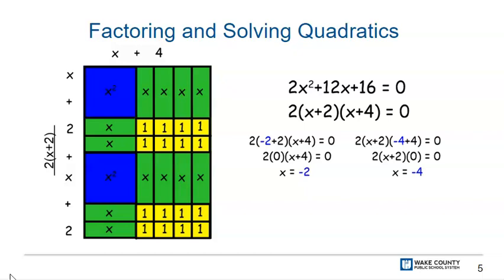In the example shown, there are three factors being multiplied: 2, x plus 2, and x plus 4. x equaling negative 2 can make one of these factors equal zero, and x equaling negative 4 can make another one of these factors equal zero. That means the answer to this problem is x equals negative 2 and x equals negative 4.